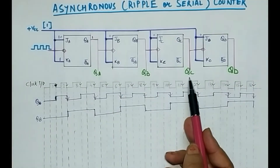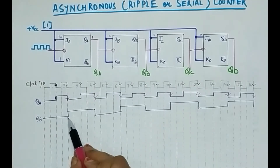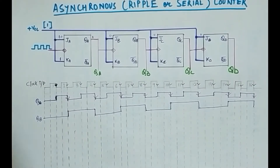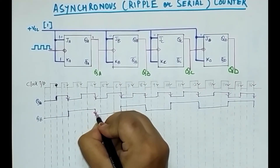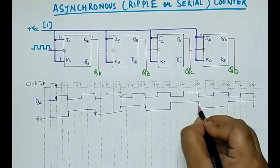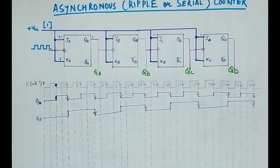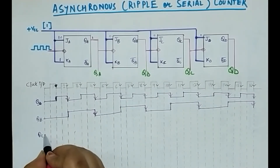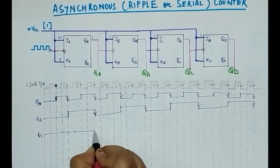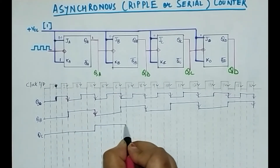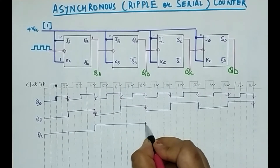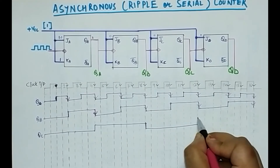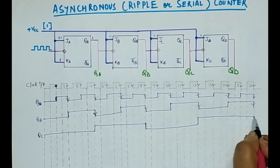I will now draw the QC output. QC will change according to QB and not according to QA or the clock input. Whenever there is a transition from 1 to 0 in QB — because it is negative edge triggered — QC will change. Initially QC was 0, then it changes at the corresponding falling edges of QB.